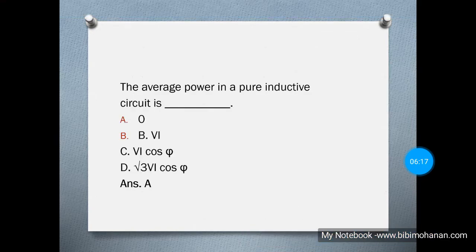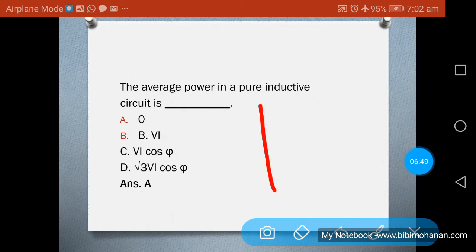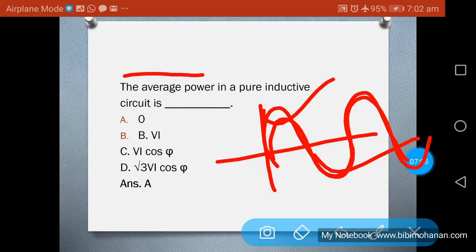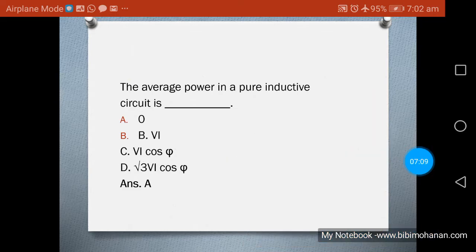The average power in a pure inductive circuit is zero. Power consumption only occurs in a resistive circuit. For average power, we take the sum of positive and negative half cycles — in an AC inductive circuit those cancel out. That is why the average power in a pure inductive circuit is zero.